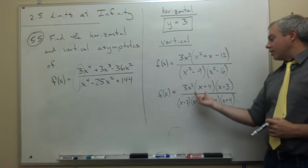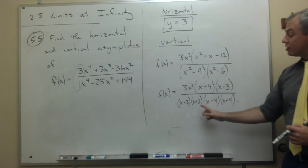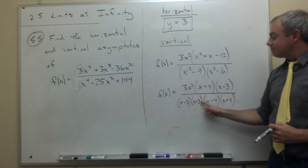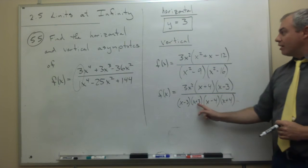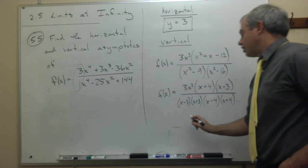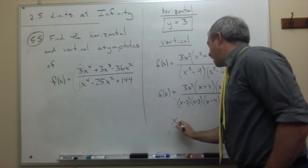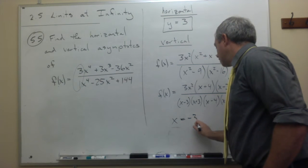x plus 3, is there an x plus 3 on top? No, there's not. So that means x plus 3 generates a vertical asymptote, and so there's a vertical asymptote at x is equal to negative 3.